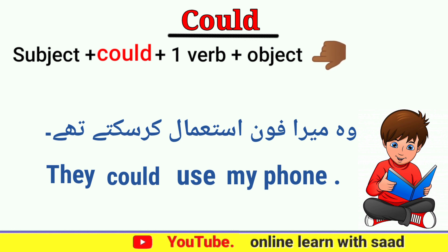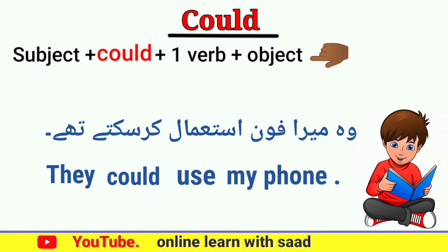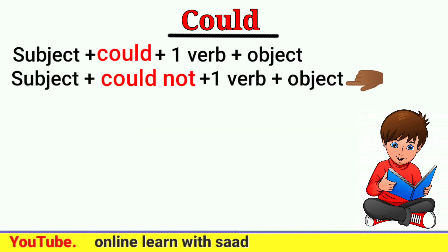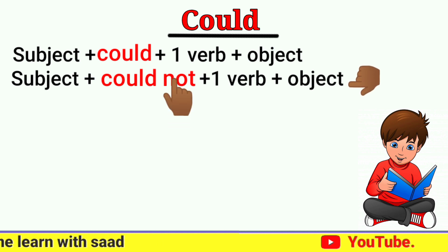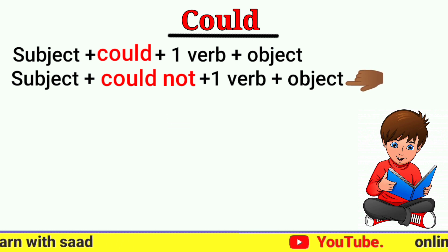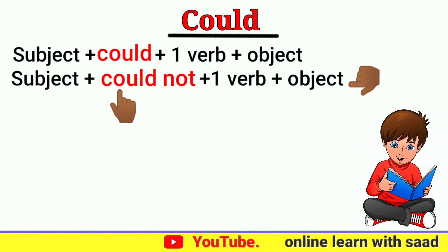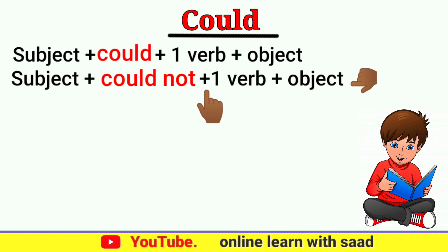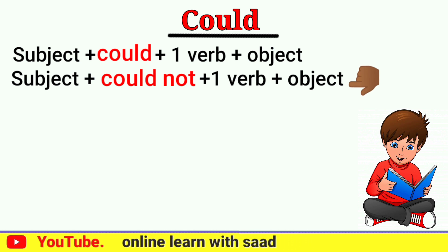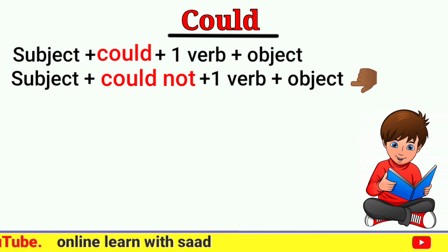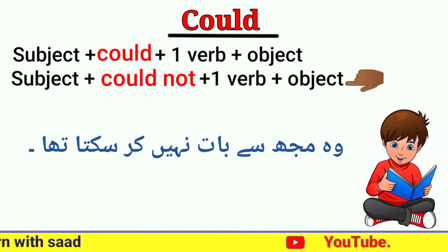اب چلتے ہیں negative جملوں کی طرف۔ Negative structure میں could کے بعد not کا اضافہ کریں گے: Subject + could + not + first form of verb + object۔ یہ ہے ہماری could modal کی negative structure۔